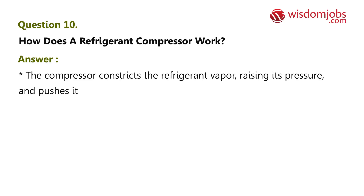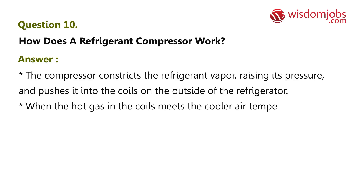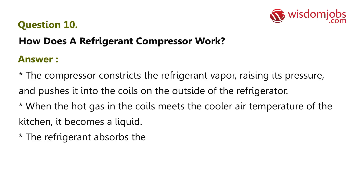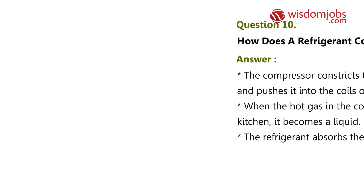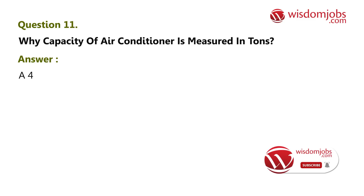Question 10: How does a refrigerant compressor work? Answer: The compressor constricts the refrigerant vapor, raising its pressure, and pushes it into the coils on the outside of the refrigerator. When the hot gas in the coils meets the cooler air temperature of the kitchen, it becomes a liquid. The refrigerant then absorbs the heat inside the fridge, cooling down the air.